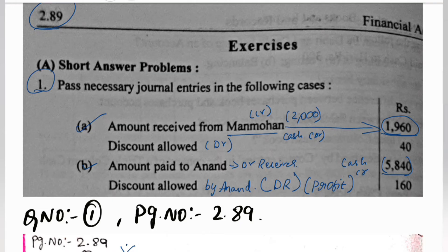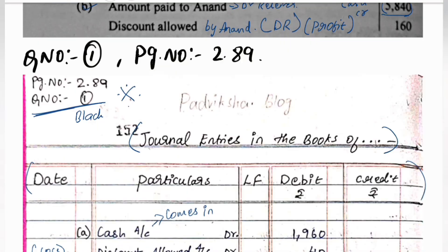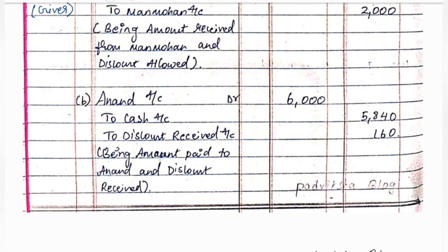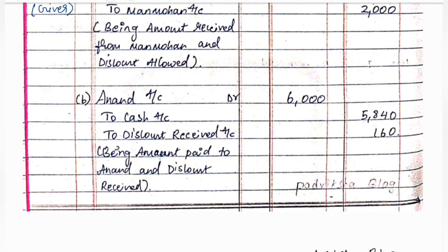Discount received is profit, nominal account. Nominal account golden rule: credit the profit. So discount received credit. Cash goes out, that's why we credit $5840. Anandh account debit — Anandh is the receiver. Anandh gets $5840 plus $160, that is $6000. So Anandh account debit $6000, cash account credit $5840, discount received credit $160.